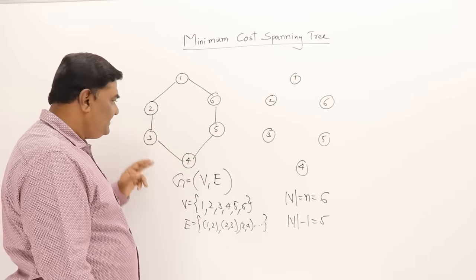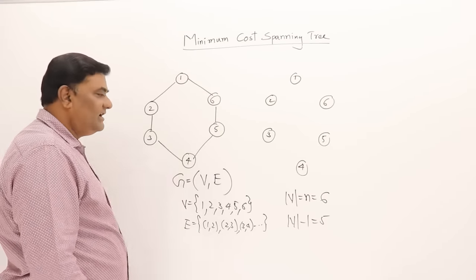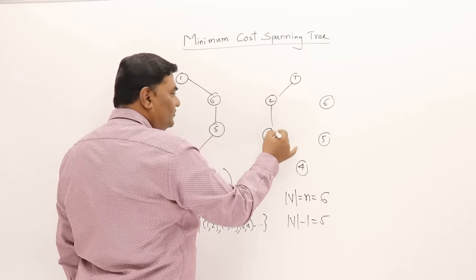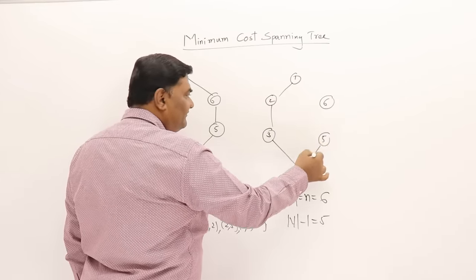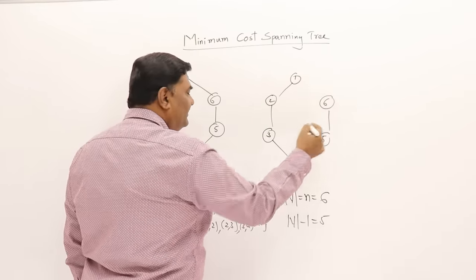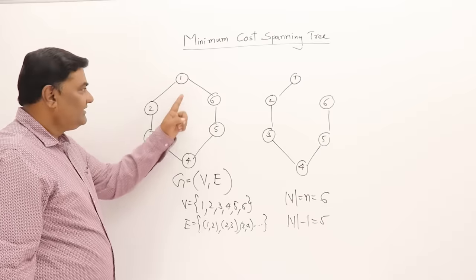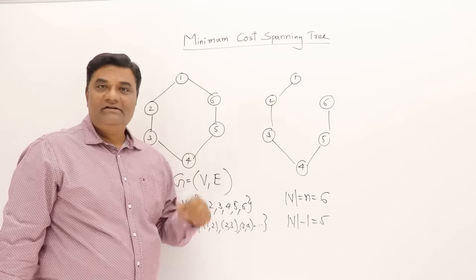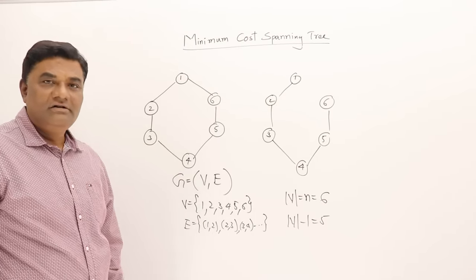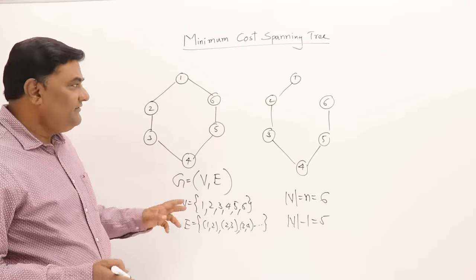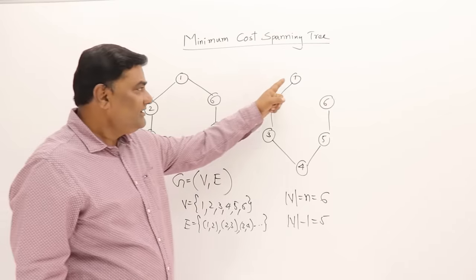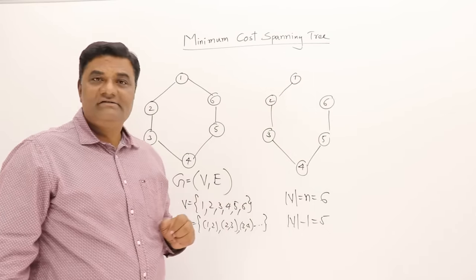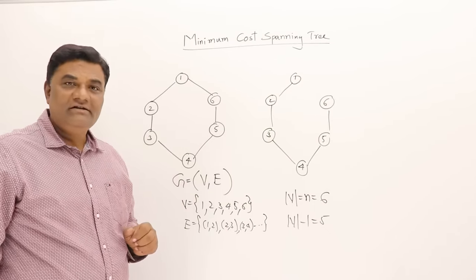A spanning tree is a subgraph of a graph having all vertices but only n minus 1 edges. So out of these edges I should take only 5. I did not take this one — so this is a spanning tree. A tree will not have a cycle, and there is no cycle here.